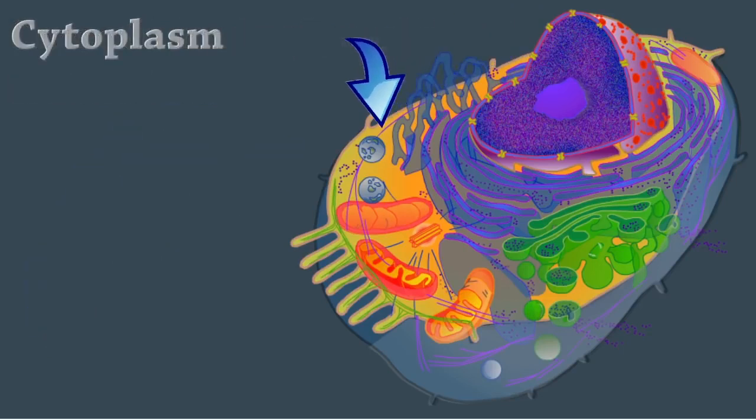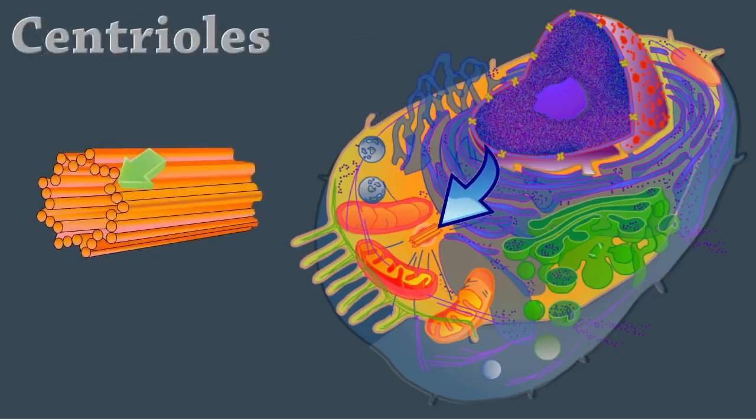In addition to organelles, the cytoplasm also contains other cellular structures. Centrioles are paired cylindrical bodies. Each one is composed of nine triplets of microtubules. They organize a microtubule network during mitosis to form the spindle, asters, and basis of cilia and flagella.